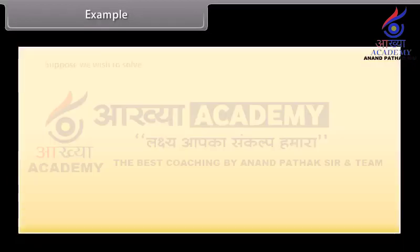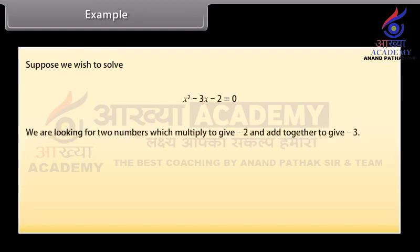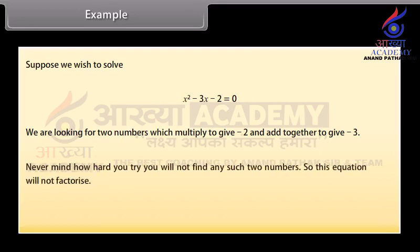Example. Now suppose we wish to solve x squared minus 3x minus 2 equals zero. We are looking for two numbers which multiply to give minus 2 and add together to give minus 3. No matter how hard you try, you will not find any such two numbers. So this equation will not factorize. For this we need another approach — we will learn that in the next screen.